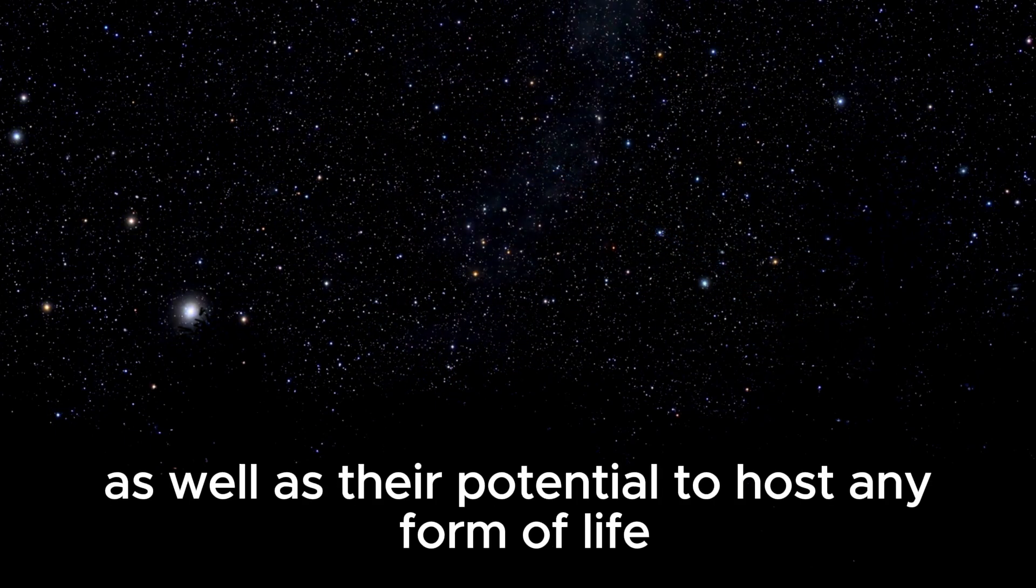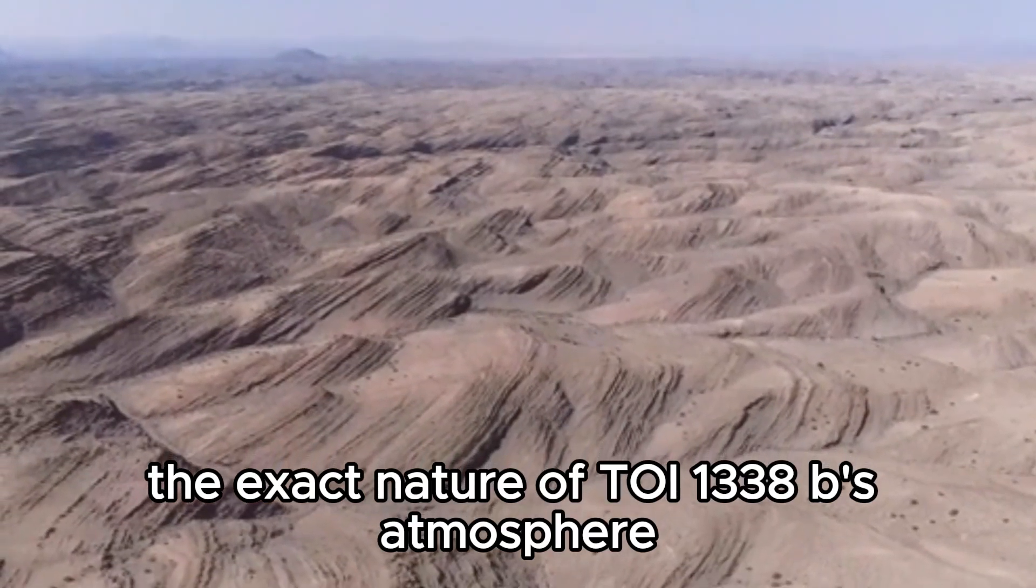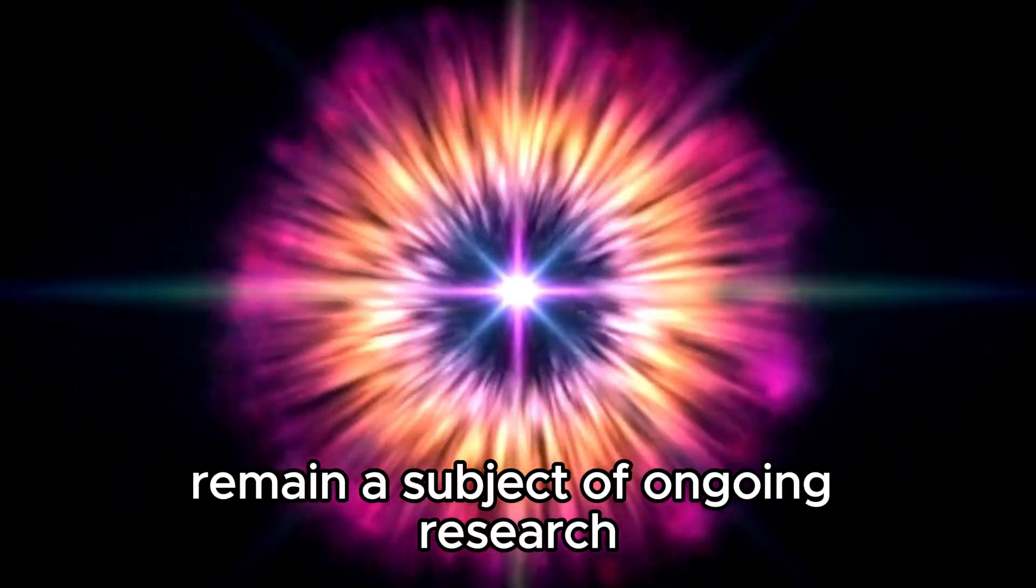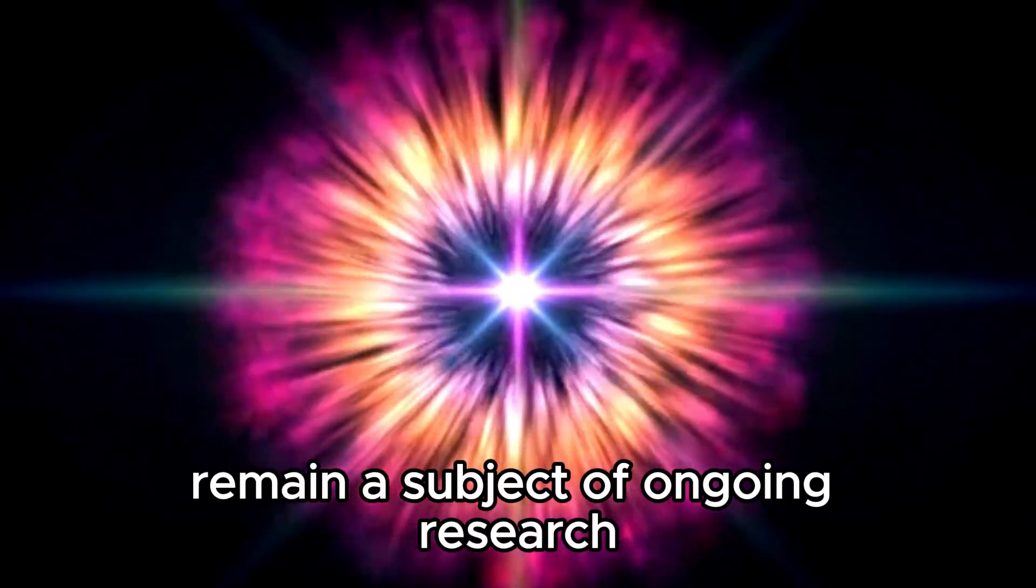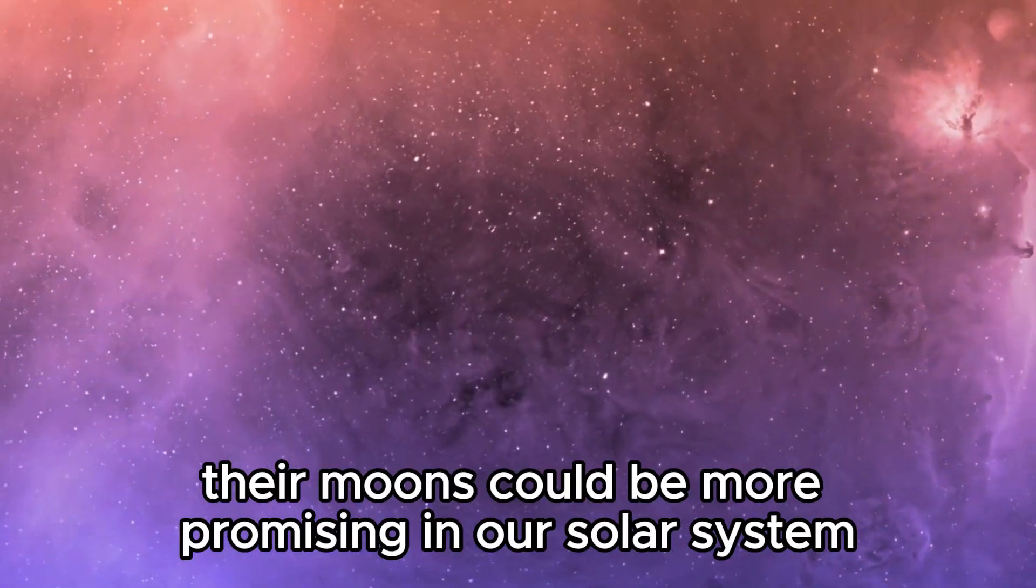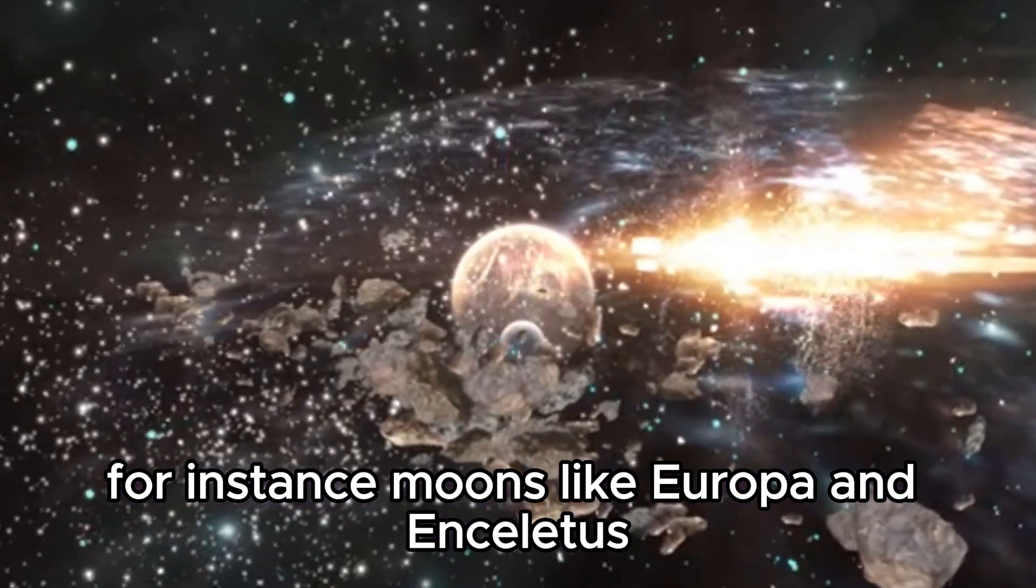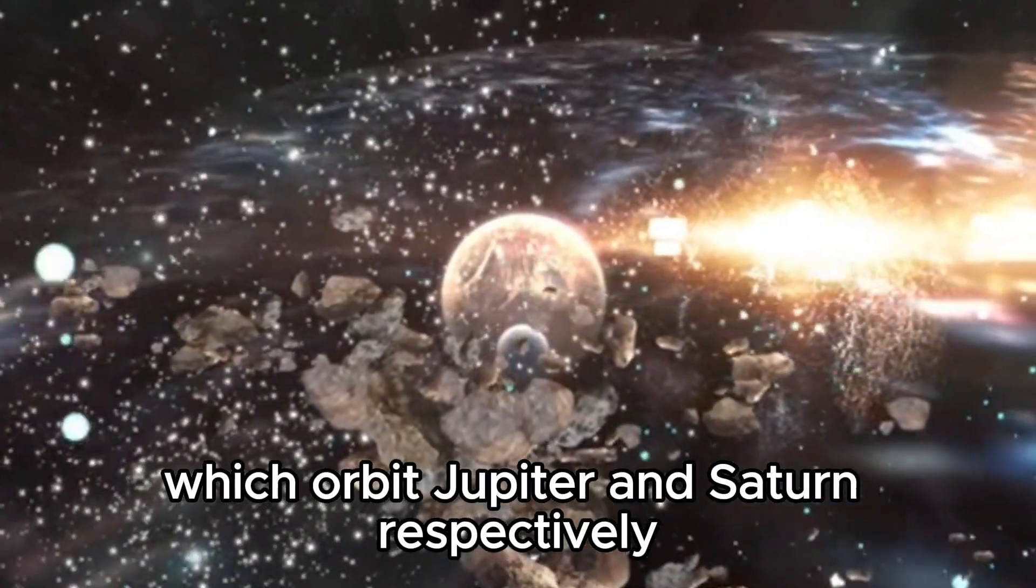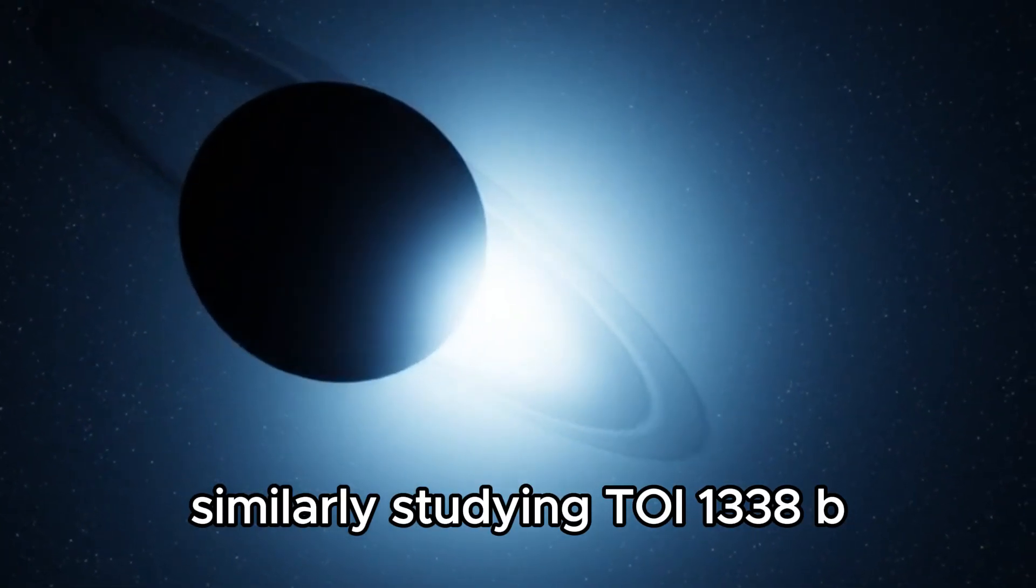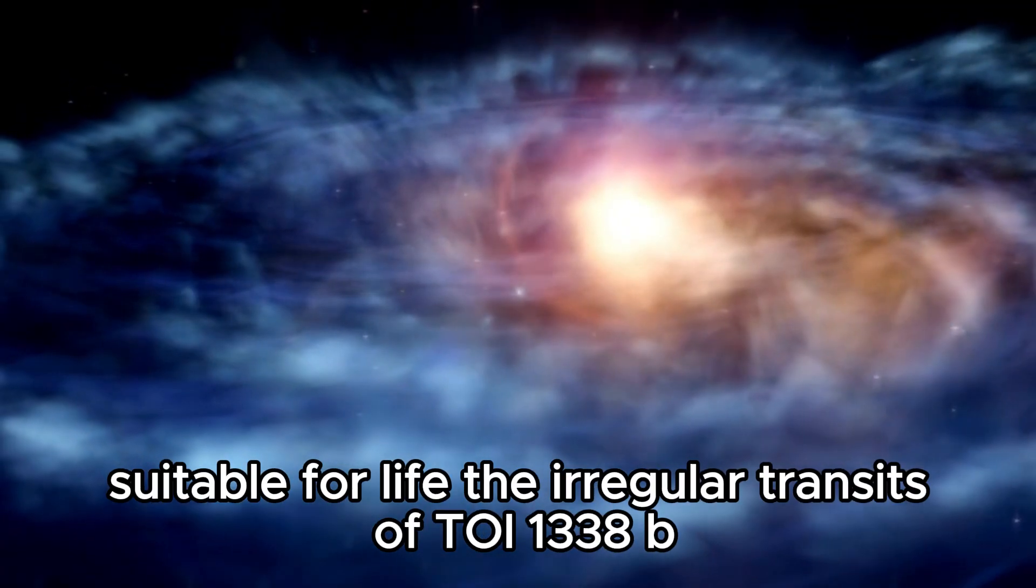The atmospheric composition of gas giants is crucial for understanding their formation and evolution, as well as their potential to host any form of life, even if it is vastly different from life as we know it. The exact nature of TOI1338b's atmosphere and its potential for supporting any form of life remain a subject of ongoing research. While gas giants are not considered candidates for life as we understand it, their moons could be more promising. In our solar system, for instance, moons like Europa and Enceladus, which orbit Jupiter and Saturn respectively, are of great interest due to the potential for subsurface oceans. Similarly, studying TOI1338b might eventually reveal moons that could harbor conditions suitable for life.